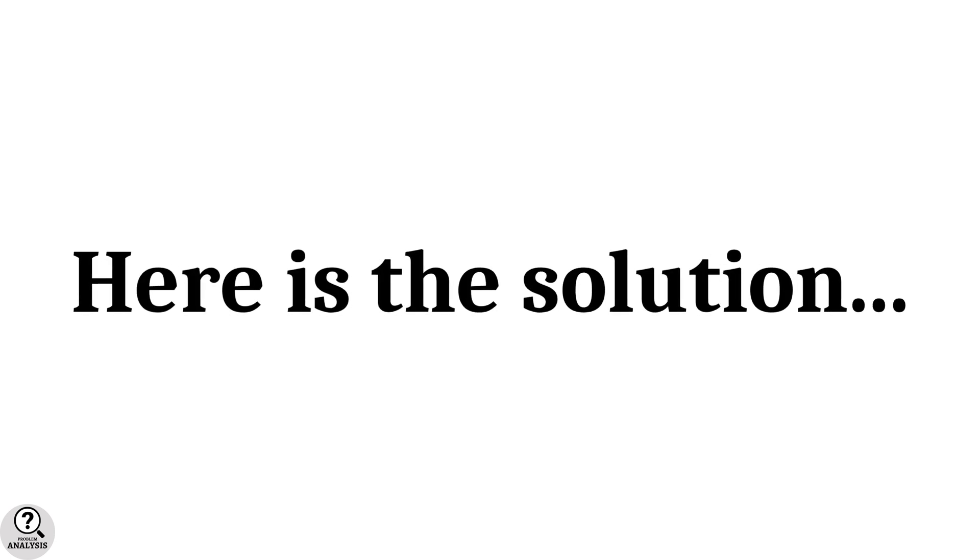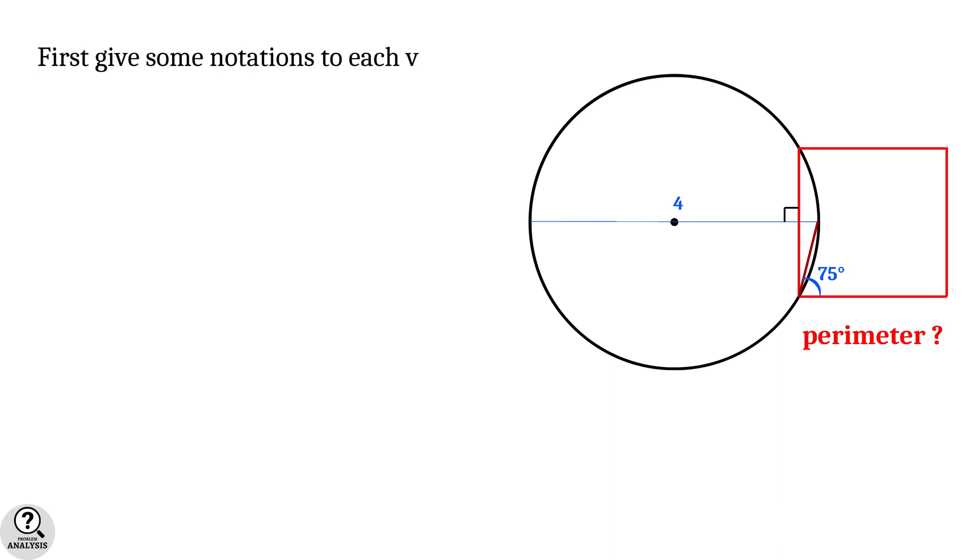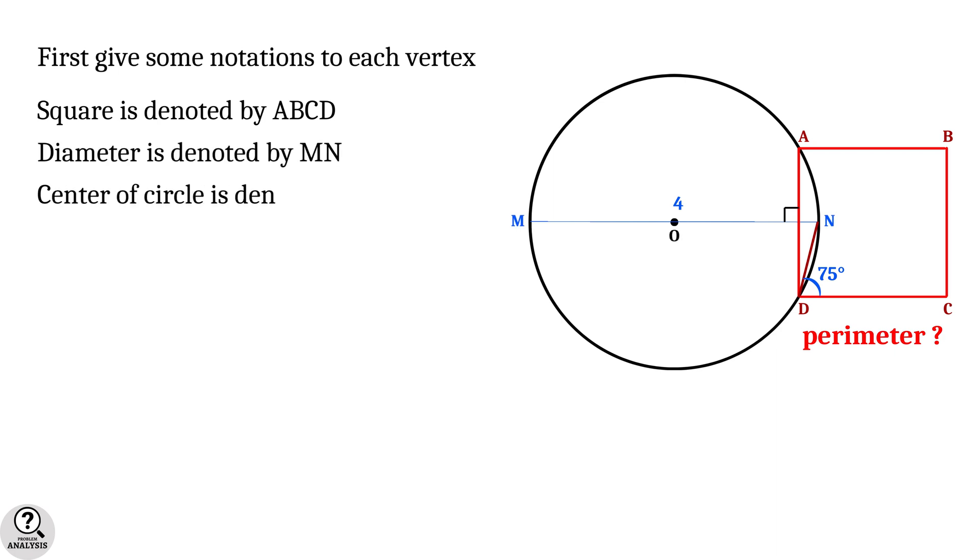And the solution is right here. First, let's give some notations to each vertex. The square is denoted by ABCD, the diameter is denoted by MN and the center of the circle is denoted by O.